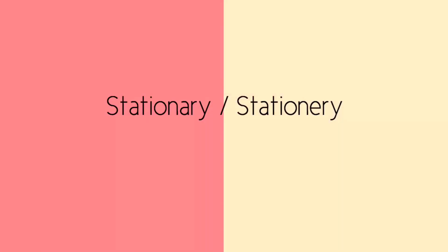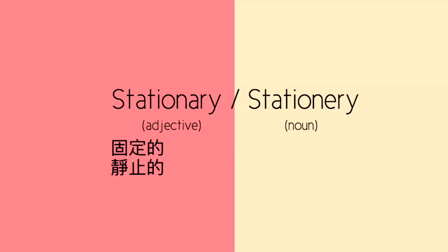Without further ado, let's begin. One difficult set of words is the two spellings of stationary. One word is spelled with an A and the other one is spelled with an E. Stationary with an A means fixed in one place — it's an adjective.